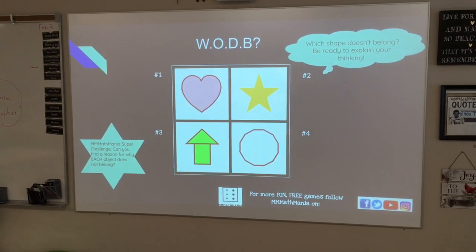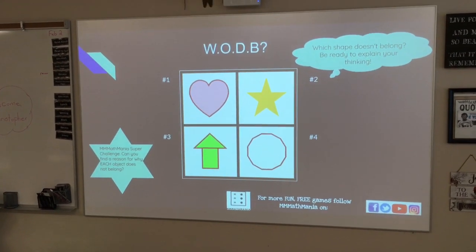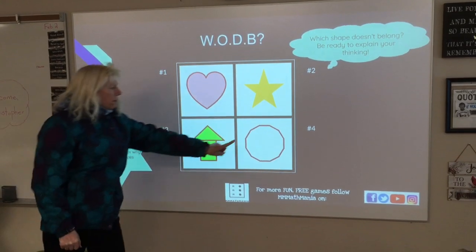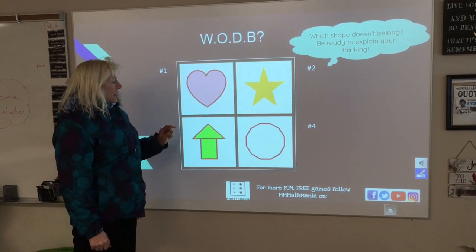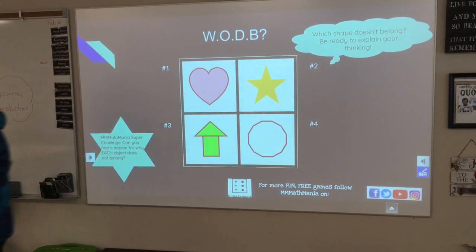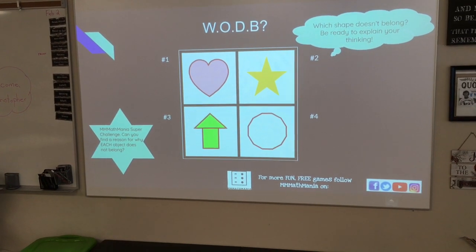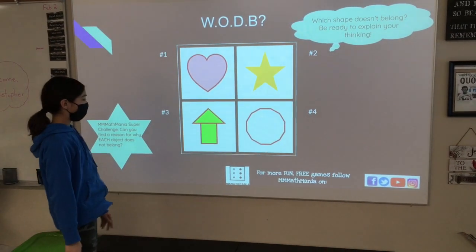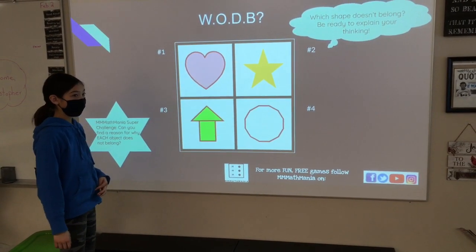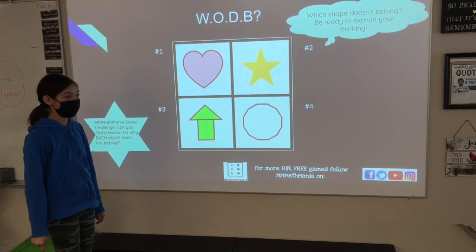Okay, round two. This time we'll go in reverse order. We'll invite Donna out first. Donna, which one doesn't belong and why? This one because it doesn't have any points like the others. Okay, thank you. Sienna, which one doesn't belong and why? That one because it has a line separating the shape — because it's made from two shapes, a rectangle and a triangle. Thank you.